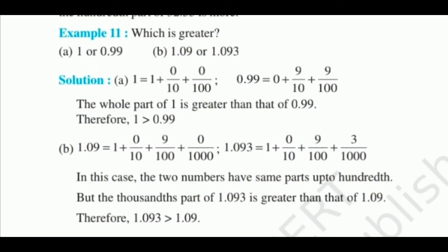Solution: (a) 1 is 1 plus 0 by 10 plus 0 by 100. For 0.99, we can write 0 plus 9 by 10 plus 9 by 100. The whole part of 1 is greater than that of 0.99. Therefore, 1 is greater than 0.99.